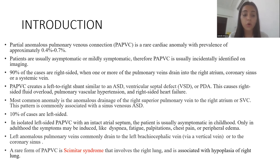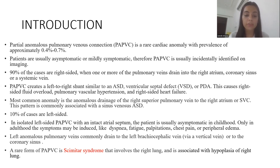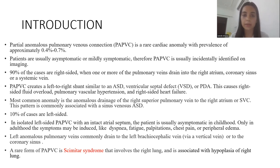Left anomalous pulmonary veins commonly drain to the left brachiocephalic vein via a vertical vein or into the coronary sinus. A rare form of PAPVC is scimitar syndrome, which involves the right lung and is associated with hypoplasia of the right lung.